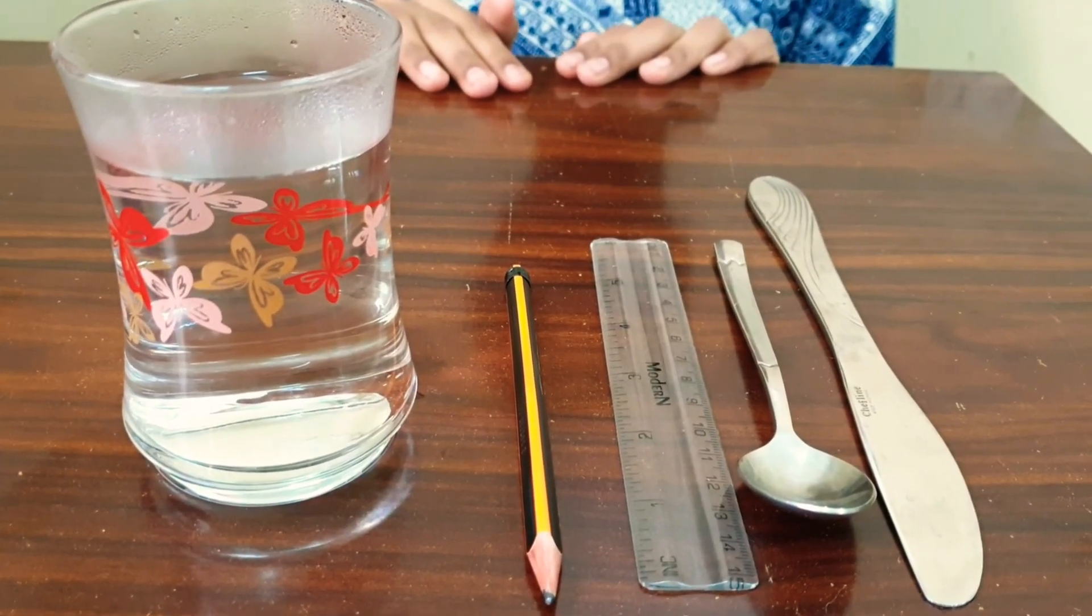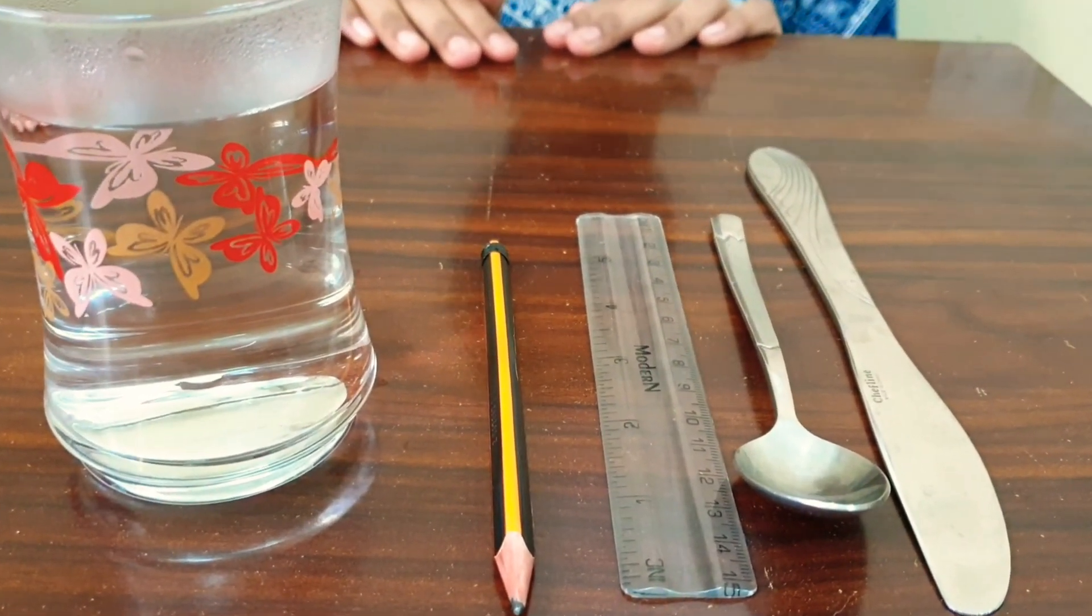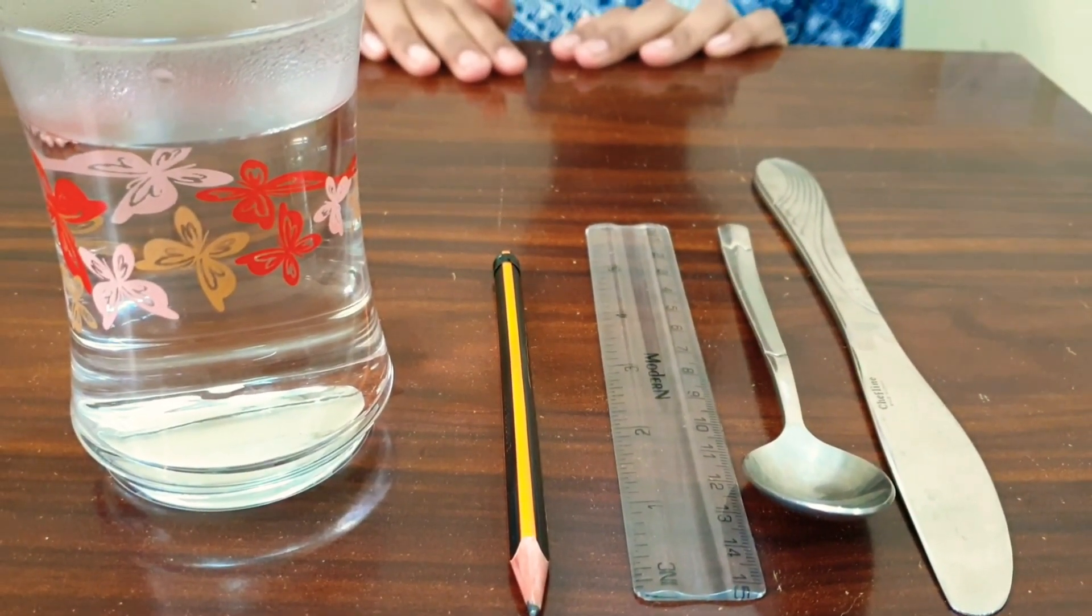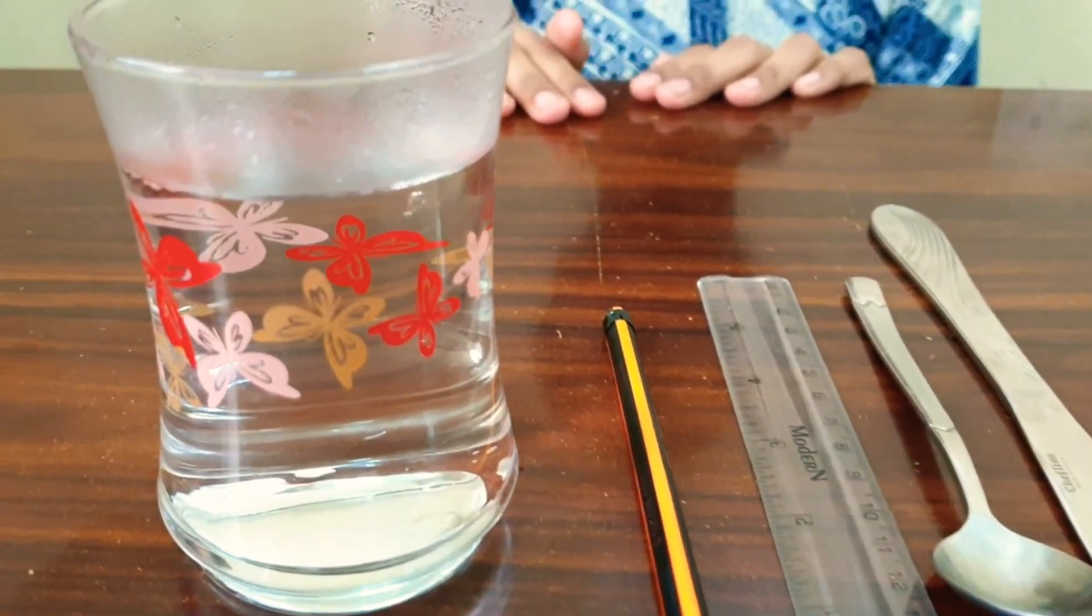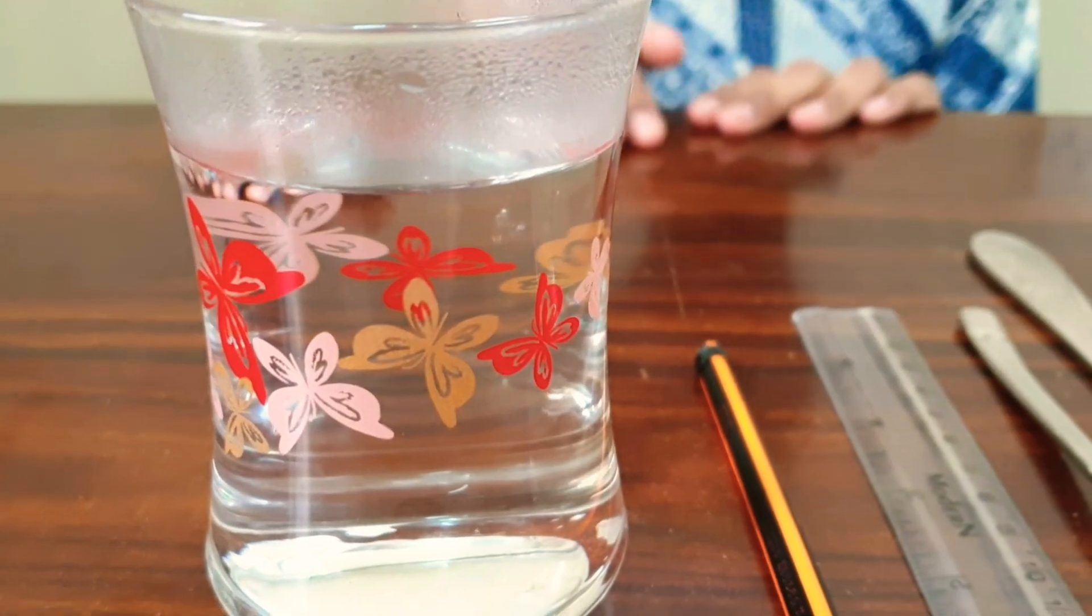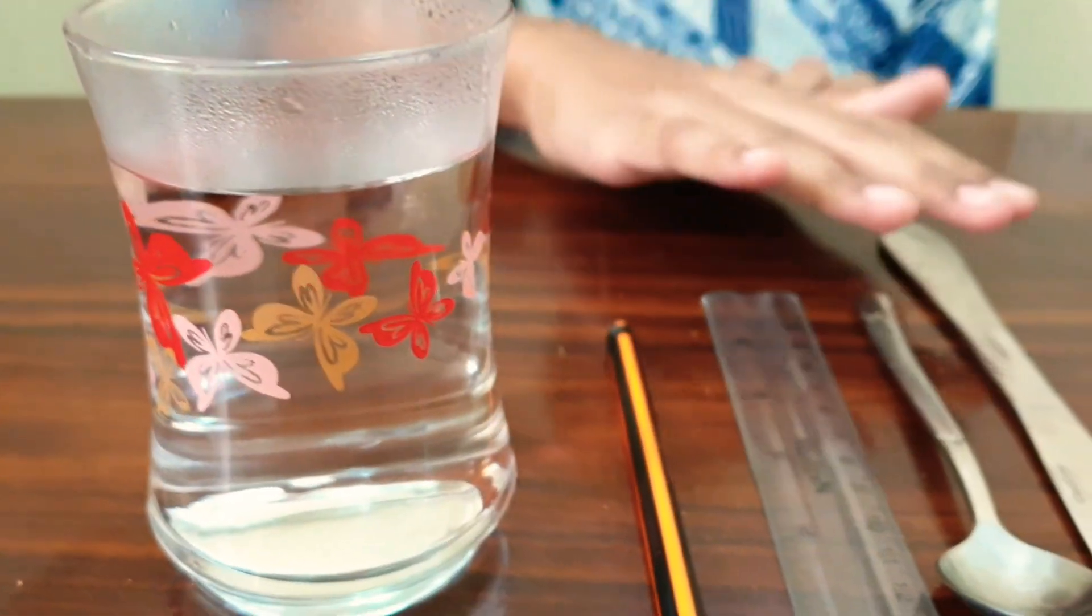Hello friends, welcome back. Today we're going to do a science experiment to figure out the difference between conductors and insulators. First, we heat some water in a pan and then pour it into a glass.